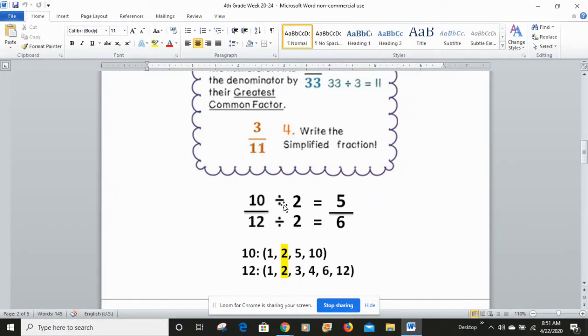So I take my numerator, divide by 2, and my denominator, divide by 2. 10 divided by 2 is 5, 12 divided by 2 is 6. So my fraction 10/12 in simplest form is 5/6.